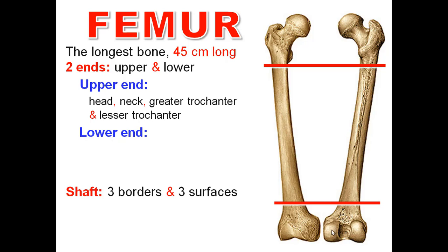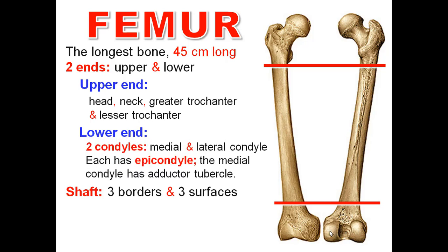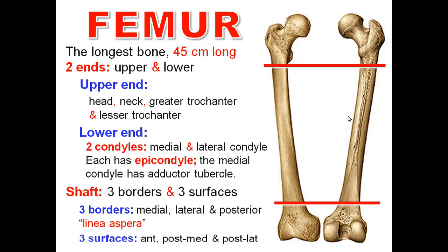The lower end has two condyles: medial condyle and lateral condyle. Each condyle has an epicondyle. The medial condyle also has the adductor tubercle. The shaft in the middle third is triangular in cross section; therefore it has three borders and three surfaces. The posterior border is called the linea aspera. The three surfaces are the anterior surface, posterior medial surface, and posterior lateral surface.